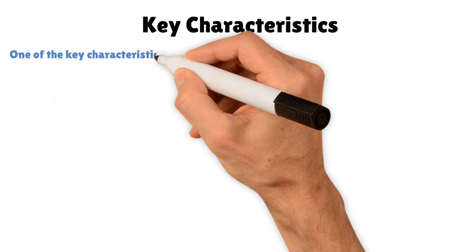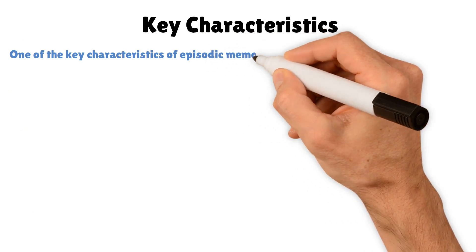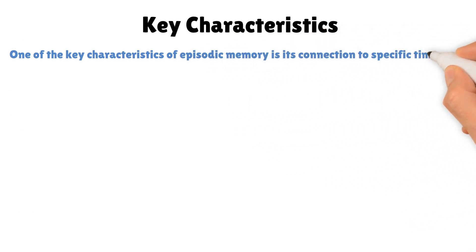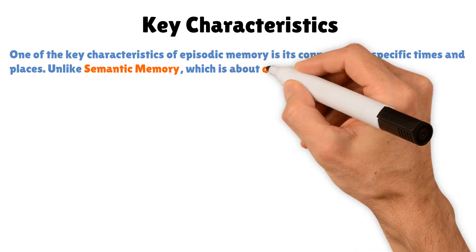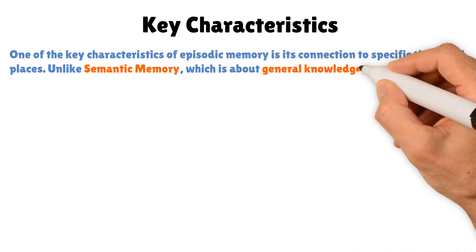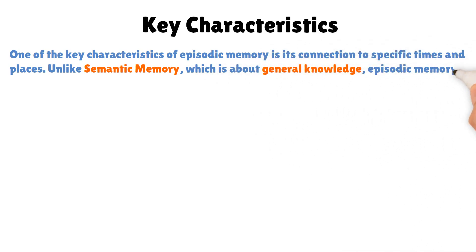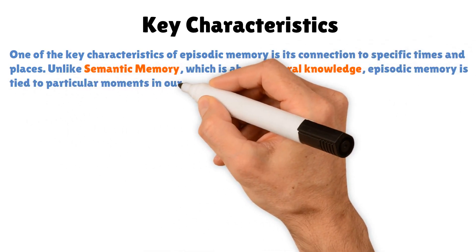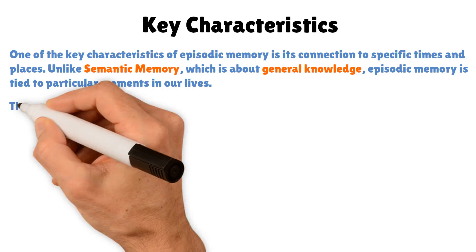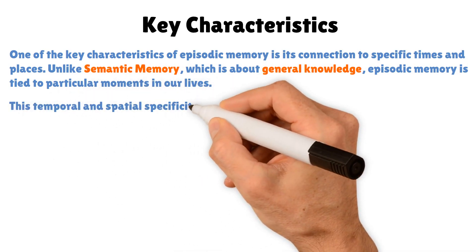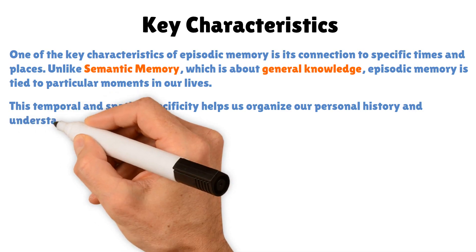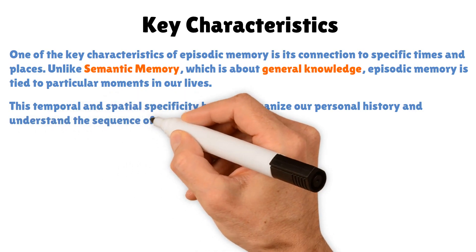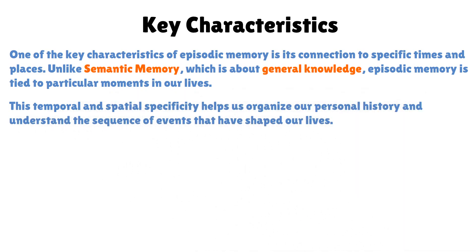One of the key characteristics of episodic memory is its connection to specific times and places. Unlike semantic memory, which is about general knowledge, episodic memory is tied to particular moments in our lives. This temporal and spatial specificity helps us organize our personal history and understand the sequence of events that have shaped our lives.